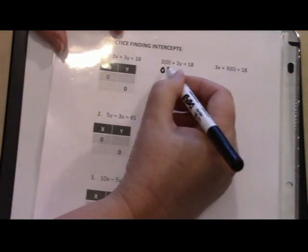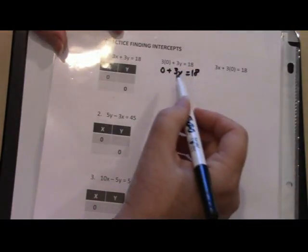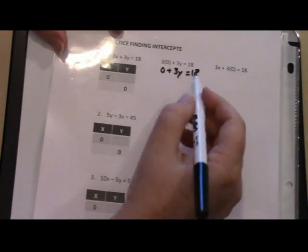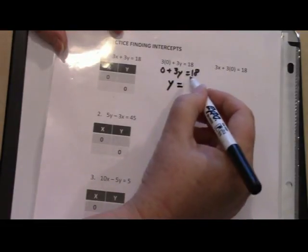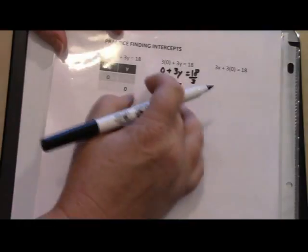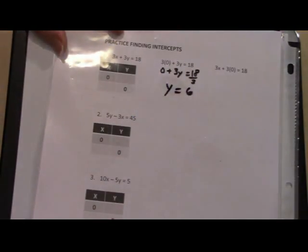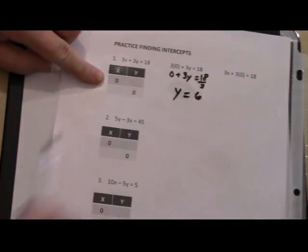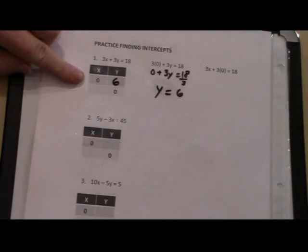3 times 0 is 0 plus 3y equals 18. I'm going to divide both sides by 3. That leaves me y. And 18 divided by 3, y equals 6. Now I can fill out my xy table here and I can now fill in the number 6 in that spot.